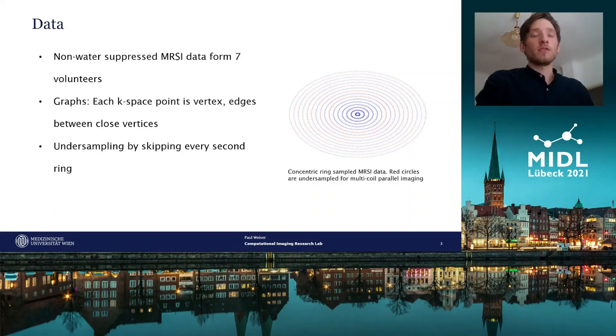The data of the first six volunteers was used for training, and the data of the last volunteer was split up into a validation and a testing set. In each scan, concentric ring trajectories were used.